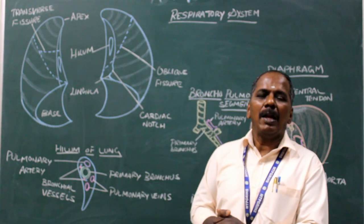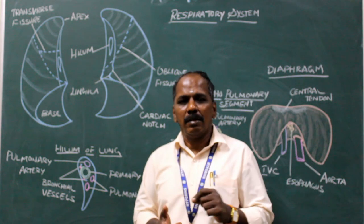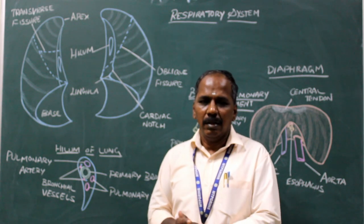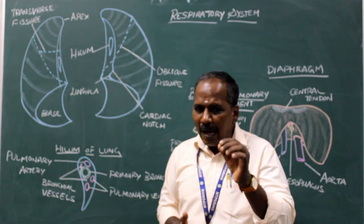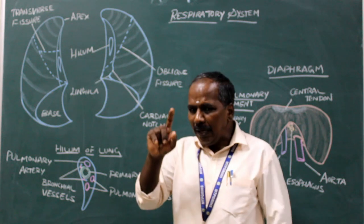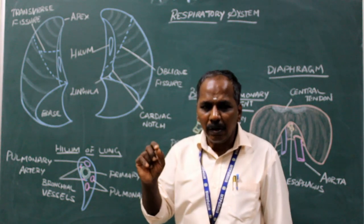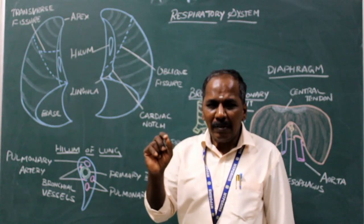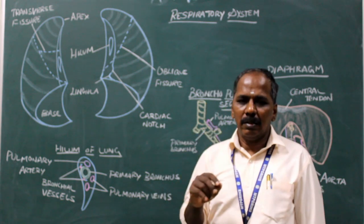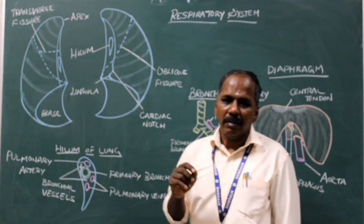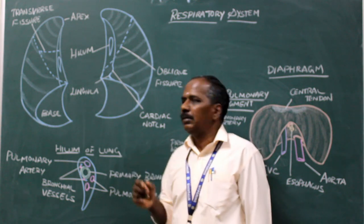Blood supply is via bronchial arteries and bronchial veins. Nerve supply: sympathetic nerves arise from the T2, T3, T4, T5 segments of the spinal cord; parasympathetic supply is by the vagus nerve.